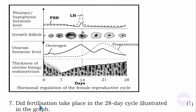Question number seven: did fertilization take place in the 28-day cycle illustrated in the graph? Looking at the graph, the corpus luteum is decreasing in size — it is shrinking. The level of progesterone is also decreasing. There is no need to maintain the endometrium because fertilization has not taken place. The answer is no — fertilization did not take place, because the progesterone level is decreasing and the corpus luteum is also shrinking.